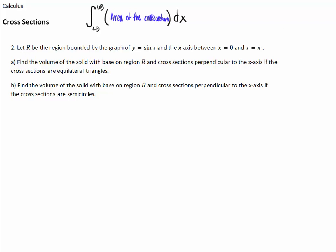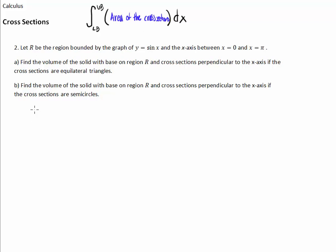Let's figure out this region. The graph of y equals sine of x, counting by pi halves: this is pi halves, this is pi. Negative pi halves, negative pi — values of 1 and negative 1. Sine looks like this wave. The x-axis is easy. We're going from zero to pi — just this little region here. Part A: find the volume of the solid with base on region R, cross-sections perpendicular to the x-axis, equilateral triangles.